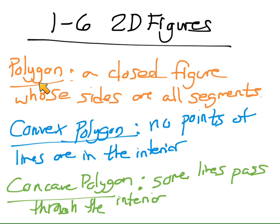So at first, a polygon. A polygon is just a closed figure, which I'll show you some examples in just a second, whose all sides are segments, has no lines. It's just segments, line segments. A convex polygon have no points of the lines that are on the interior, and a concave has some of the lines pass through the interior of the polygon.